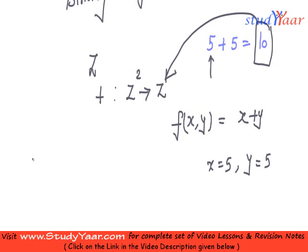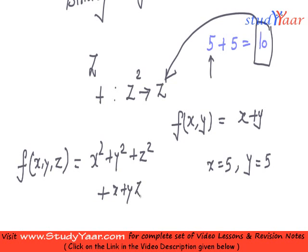Similarly, you can have a ternary operation. Let us call it as f of x, y, z. We can define it as anything. Let us call it as x square plus y square plus z square plus x, y, z. So, this is going to be a ternary operation on x, y and z, where x, y, z belongs to Z.